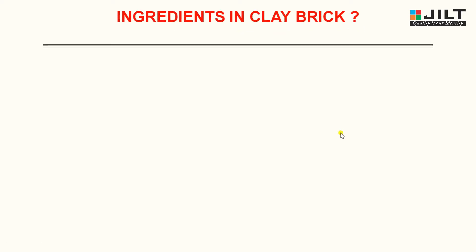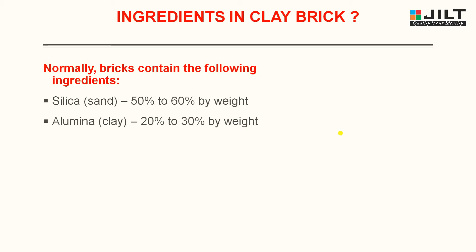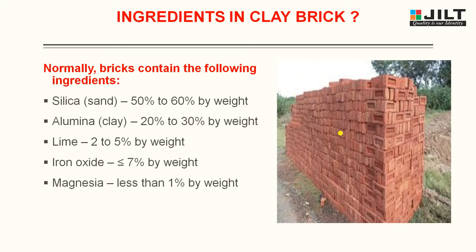Now let us look at what ingredients are available in clay. Bricks contain the following ingredients: silica 50–60% by weight, alumina (clay) 20–30% by weight, lime 2–5% by weight, iron oxide less than 7% by weight, and magnesia less than 1% by weight. The image shown here displays clay bricks after burning.